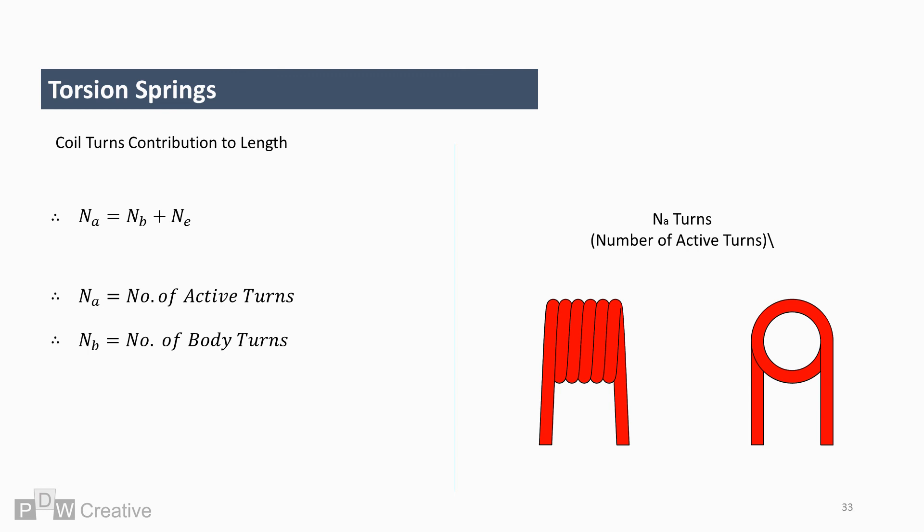NA is usually known. I say this because it's a key input when designing the spring. It can be used to find NB if needed. NA equals NB plus NE.